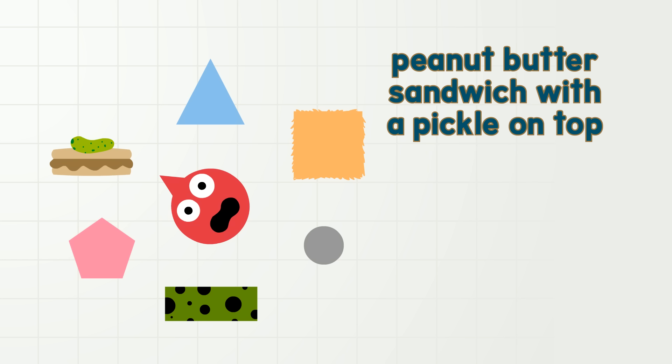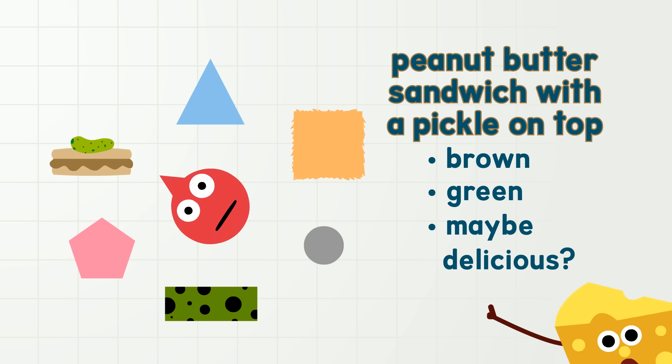And peanut butter sandwich with a pickle on top, well, is brown and green and maybe delicious? Attributes!